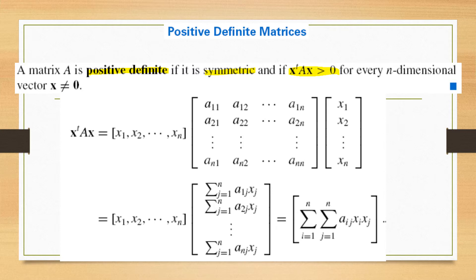X transpose AX greater than 0 for every n-dimensional vector X which is not equal to zero.